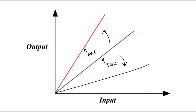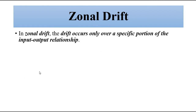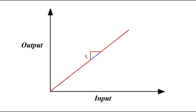In zonal drift, as the name suggests, only a specific portion or certain region of the input-output relationship curve experiences drift or deviation. The portion that experiences fluctuation or drift is a specific zone of the ideal input-output relationship curve — that's why it is called zonal drift.